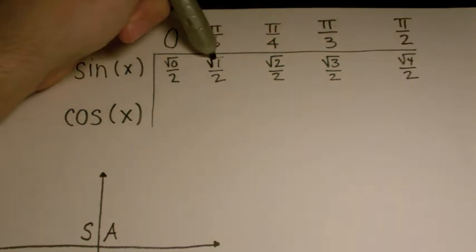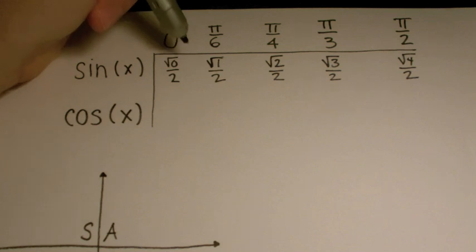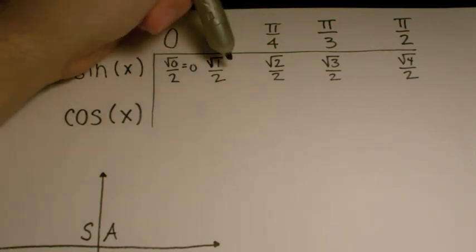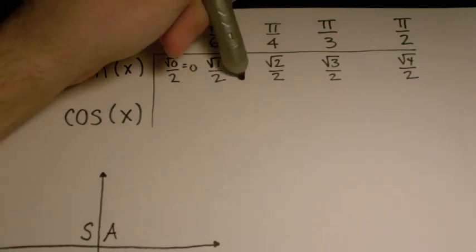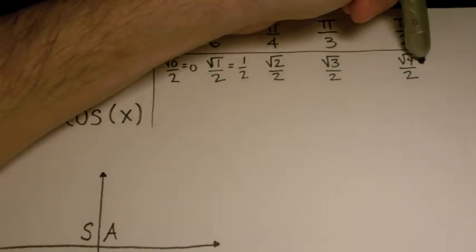Obviously some of these things can be simplified. √0 over 2, that's just 0. √1 over 2, that's just 1/2. And √4 over 2, that's just 1.